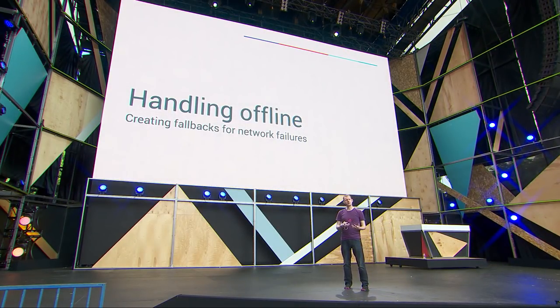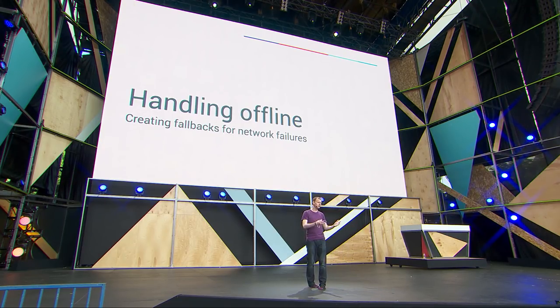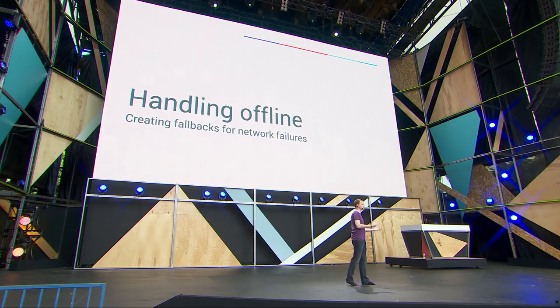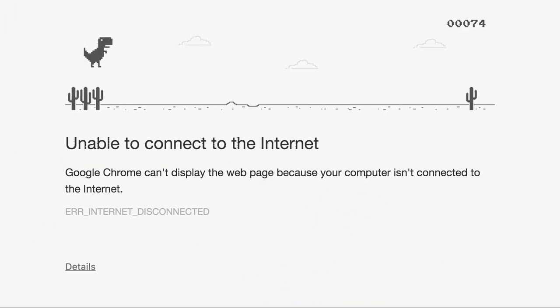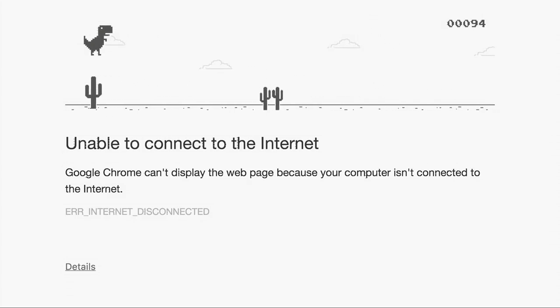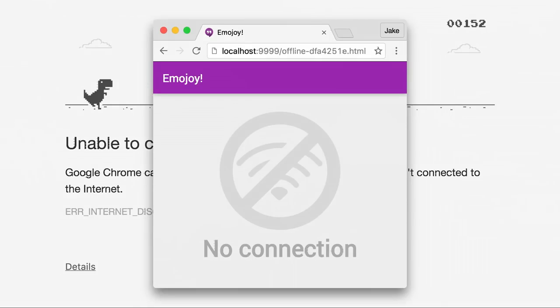A good way to dip your foot into the Service Worker pool is to make an offline fallback page — something to show the user if the page fails to load. Because the current state of things is pretty bad. The user comes to our site wanting content, and without a connection, we crap ourselves to the extent that the browser has to step in and blame the user: 'Chrome can't display this page because your computer is not connected to the internet.' If we're going to be competing with native, this is like an operating system error. We can do better. So I created a custom error page — it's still an error, but at least we're owning it this time.